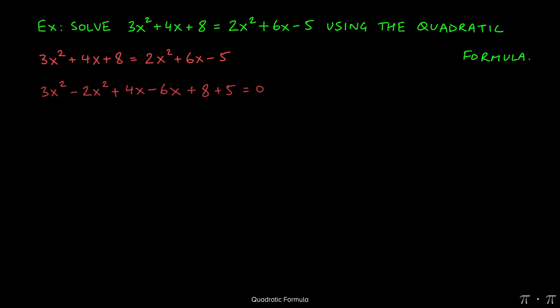When we do that, we'll get 3x² as it is minus the 2x², plus 4x minus the 6x, plus 8 plus the 5. Whenever these terms move to the other side, all the signs are going to change. So the 2x² will become a negative, the 6x will become a negative, and the negative 5 will become a positive 5. We can combine like terms to get x² - 2x + 13 = 0.